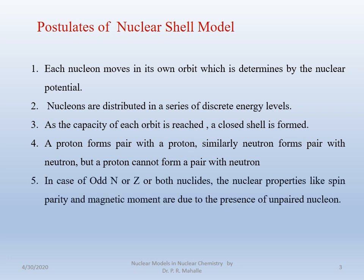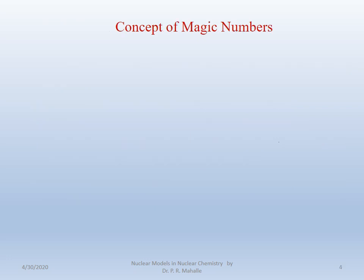In the case of odd atomic number for both nucleons, the nuclear properties like spin, parity, and magnetic moment are due to the presence of unpaired nucleons. Thus, this model is mainly applicable in the ground state of the nucleus.